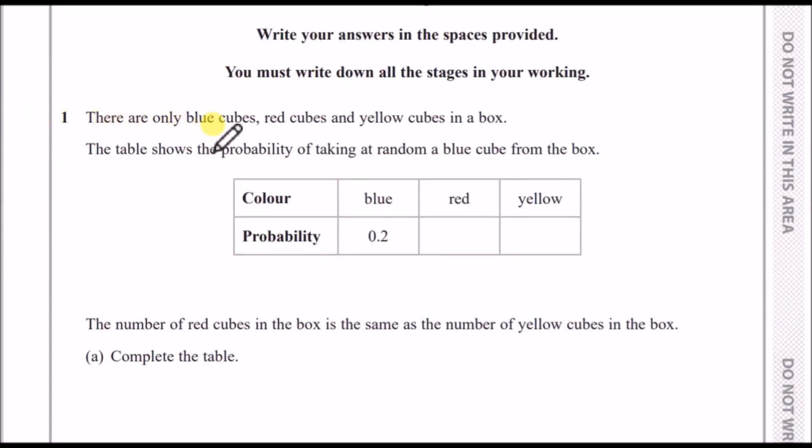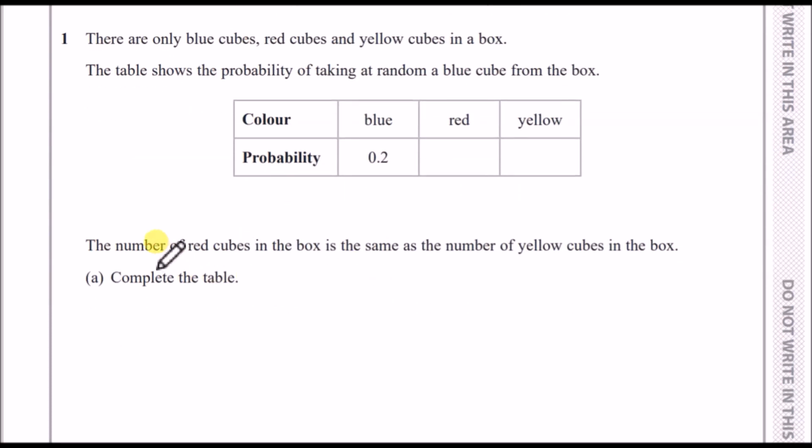Number one: there are only blue cubes, red cubes and yellow cubes in a box. The table shows the probability of taking at random a blue cube from the box. According to the statement, the number of red cubes in the box is the same as the number of yellow cubes in the box. Complete the table.